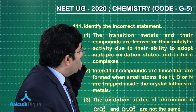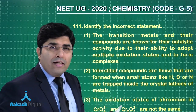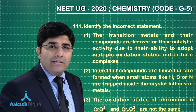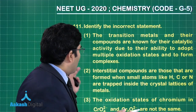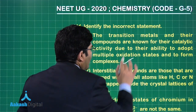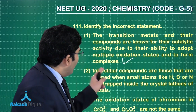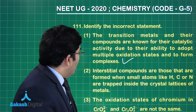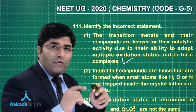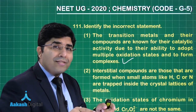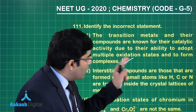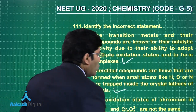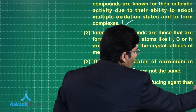Metals can act as catalysts because they provide surface area and have variable oxidation states, so the first statement is correct. The second statement — interstitial compounds are formed by atoms occupying interstitial sites, such as hydrogen, carbon, and nitrogen — is also correct.